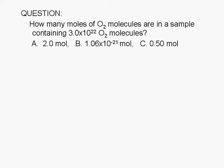How many moles of O2 molecules are in a sample containing 3.0 times 10 to the 22nd O2 molecules? A, 2.0 moles, B, 1.06 times 10 to the negative 21 moles, or C, 0.50 moles.